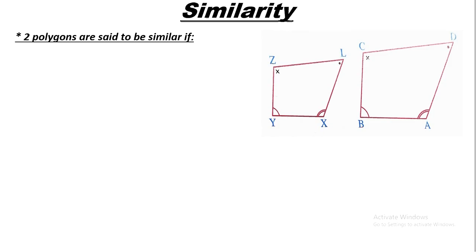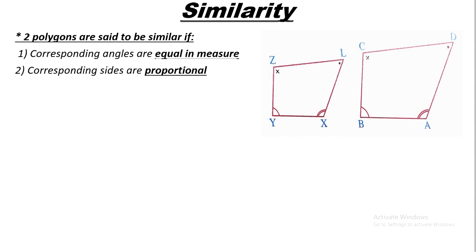Hello everyone. Today our lesson is about similarity. Two polygons are said to be similar if we have two conditions: number one, the corresponding angles are equal in measure, and number two, the corresponding sides are proportional. As we see in the figure, we have two polygons: the first one is called polygon ABCD.